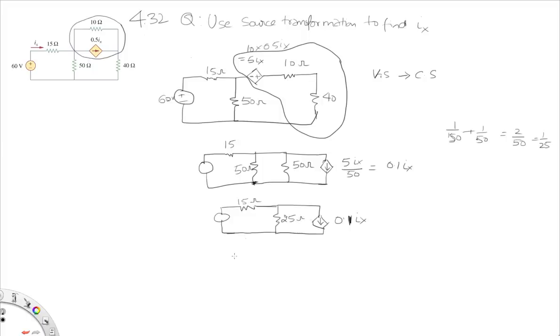Now I can redraw this again by doing another source transformation on this stuff, which gives me the circuit that says I have a 15 ohm resistor in series followed by a dependent source with that as its polarity, with my 25 ohms, and the magnitude here is going to be 0.1 ix times 25, which is going to be 2.5 ix.